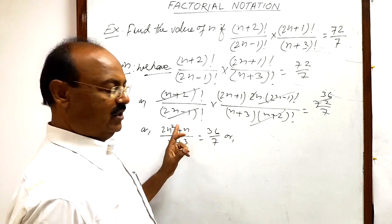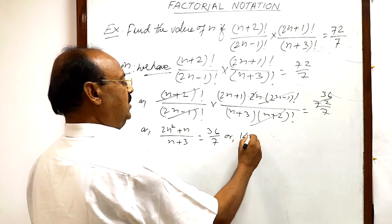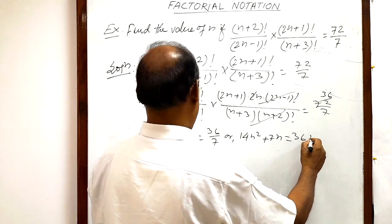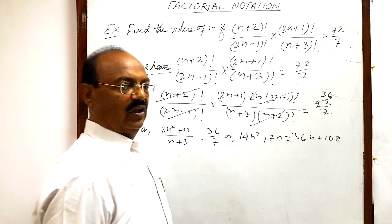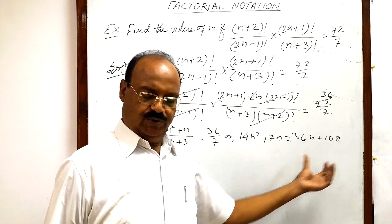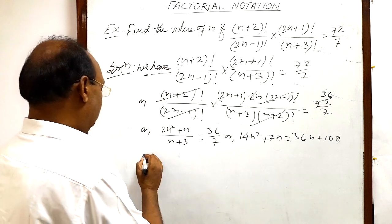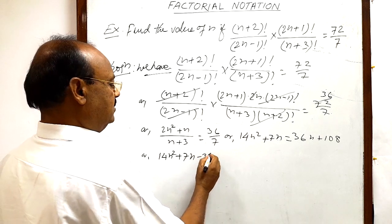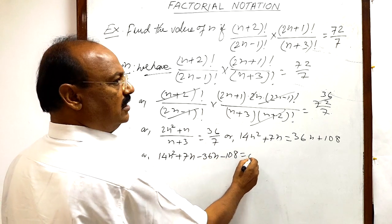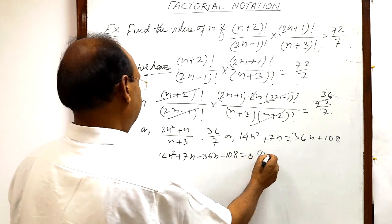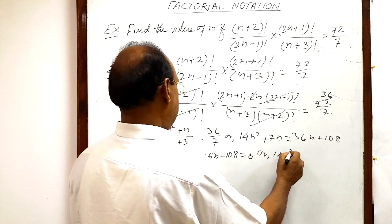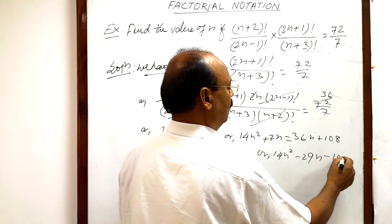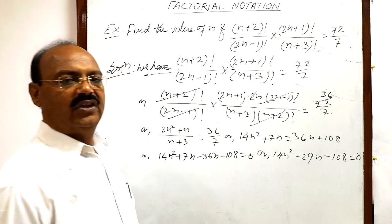Multiplying out the numerator gives (2n² + n) / (n+3) = 36/7. By cross multiplication we get 14n² + 7n = 36n + 108. Transposing terms to the left hand side, we get 14n² + 7n - 36n - 108 = 0, which simplifies to 14n² - 29n - 108 = 0.